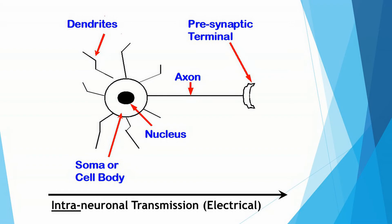Extending out from the soma as sort of branch-like structures, you have the dendrites. And then the long part of a neuron is the axon.